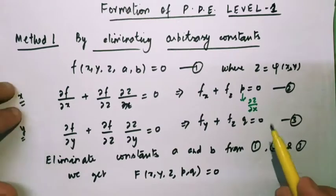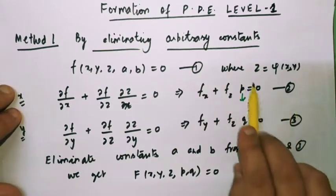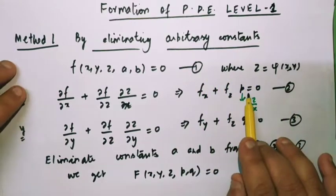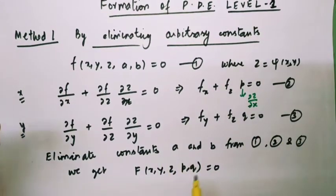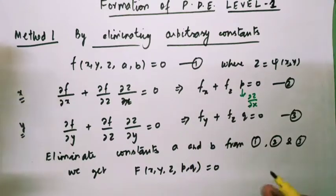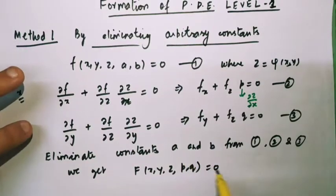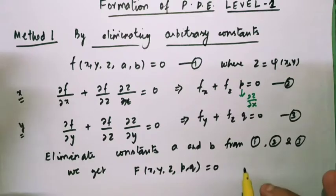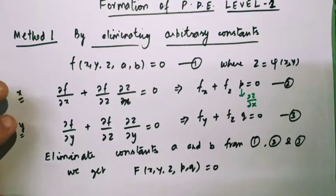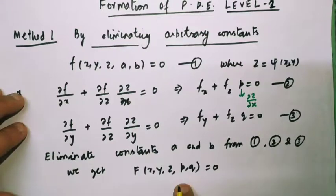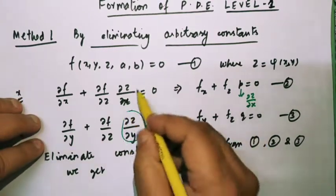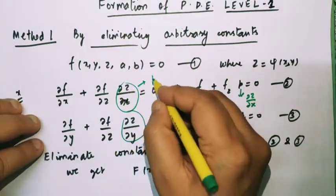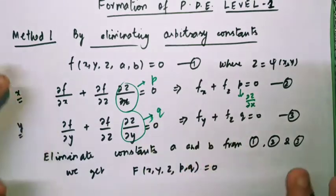So how many equations do we have now? 1, 2, 3 — three equations. From these three equations you have to eliminate the arbitrary constants a and b. You can use any method to eliminate a and b. Then you will get the answer as a partial differential equation f(x, y, z, p, q) = 0, where p = ∂z/∂x and q = ∂z/∂y are the standard notations.